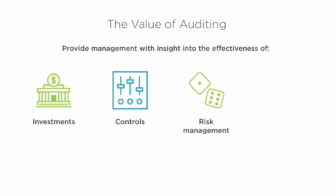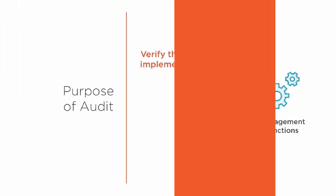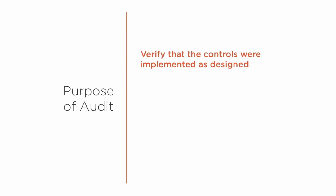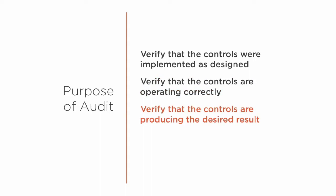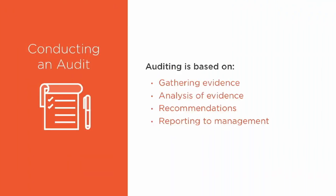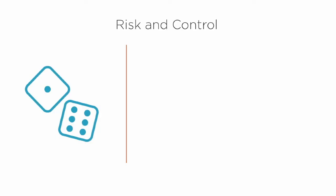This course is a high-level overview on the benefits and components of information systems auditing. It identifies the phases of IT audit and how to ensure that an audit provides value to the organization. This course will help you understand the value of audit from the perspective of either the auditor or the auditee that is subject to the audit.